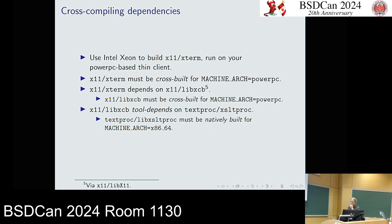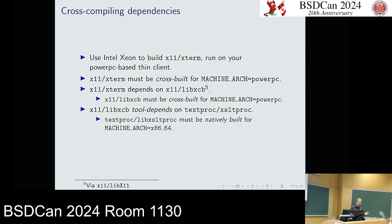So if we're on an x86 system cross-building xterm to run on a PowerPC thin client: xterm depends on libxcb, which will also be needed at runtime, so you've got to cross-build libxcb. But libxcb requires executing xsltproc, so that has to be built natively on x86. Pkgsrc will go through the dependency tree graph and switch over to native builds once it gets to a tool dependency, and then recursively those tool dependencies get native builds for their dependencies.